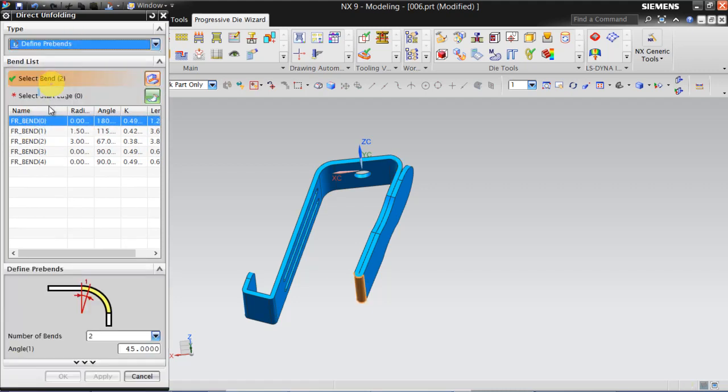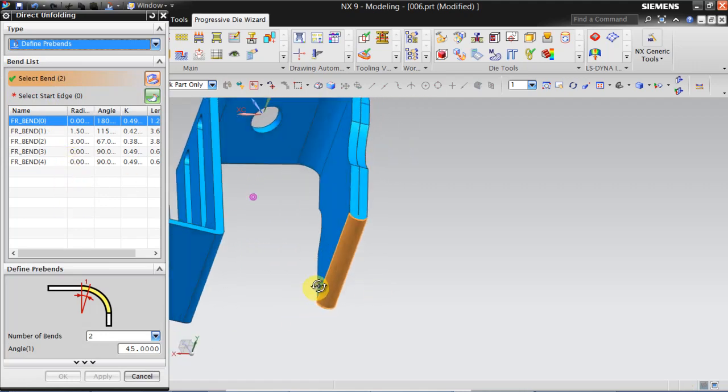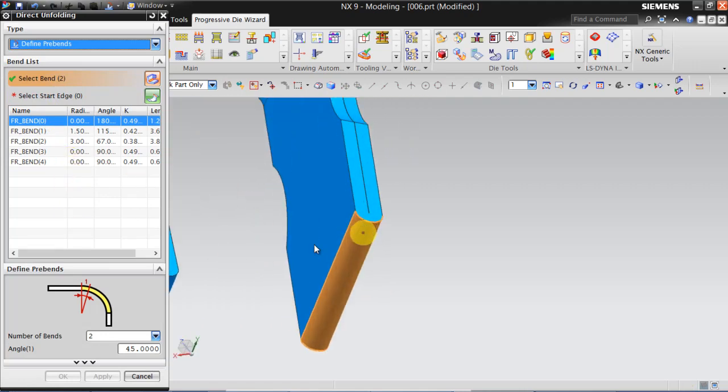Now we have to introduce pre-bends. As I said earlier this is done in 4 stages of 45 degree.